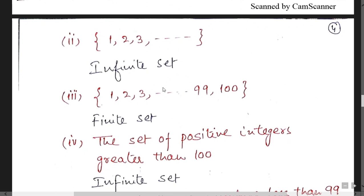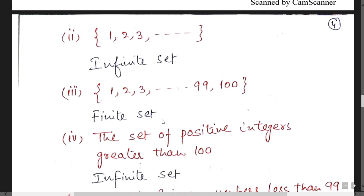1, 2, 3 up to so on with dotted line. But last point is given to you. It means the last value is 100. Means that set is finite. You can count the number of elements.